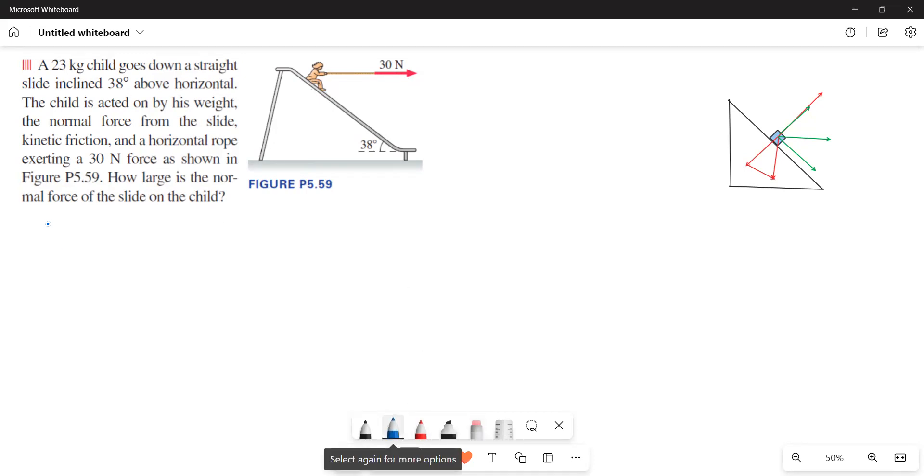Let us write the data. The mass of the child M is equal to 23 kg and then G is equal to 9.8 N per kg and then FG is equal to MG is equal to 23 times 9.8. And then now we will draw the free body diagram for this one.